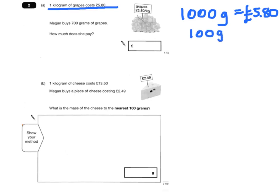Therefore a hundred grams will be a tenth of that, which is 58 pence. Because a thousand grams is 580 pence, a hundred grams is 58 pence. Therefore 700 grams is 58 times 7.